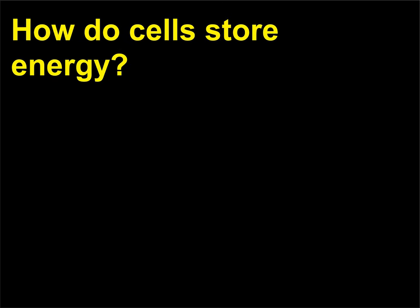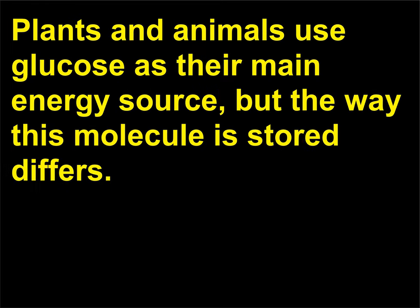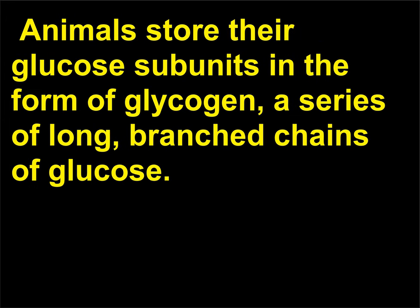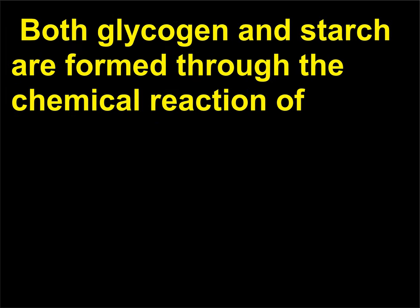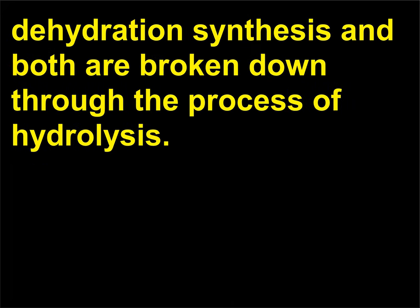How do cells store energy? Plants and animals use glucose as their main energy source, but the way this molecule is stored differs. Animals store their glucose subunits in the form of glycogen, a series of long, branched chains of glucose. Plants store their glucose as starch, formed by long, unbranched chains of glucose molecules. Both glycogen and starch are formed through the chemical reaction of dehydration synthesis and both are broken down through the process of hydrolysis.